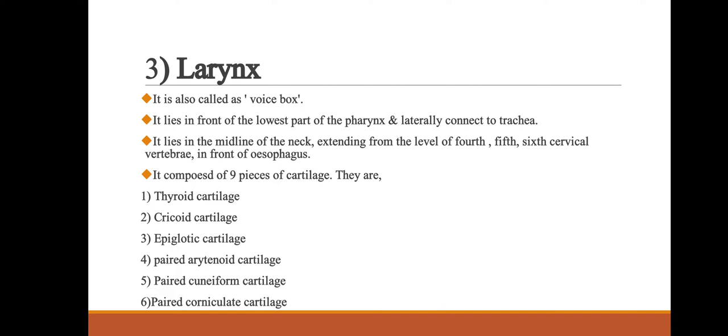The cartilages continue: 4th, paired arytenoid cartilage; 5th, paired cuneiform cartilage; and paired corniculate cartilage. Out of 9 cartilages, 3 are paired and 3 are single. The first three — thyroid, cricoid, and epiglottic cartilage — are single. The other three — arytenoid, corniculate, and cuneiform — are paired and present posteriorly.